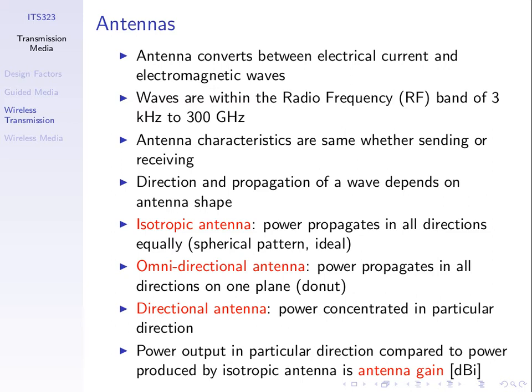Think of an isotropic antenna as some ideal or theoretical antenna. The antennas that we use actually concentrate some power in a particular direction — they don't disperse the power equally. There may be some concentration of energy in one direction, so it's strong in one direction but weak in another. An omnidirectional antenna tries to give equal power dispersion in one horizontal plane, but up and down in the vertical plane it may be weaker.